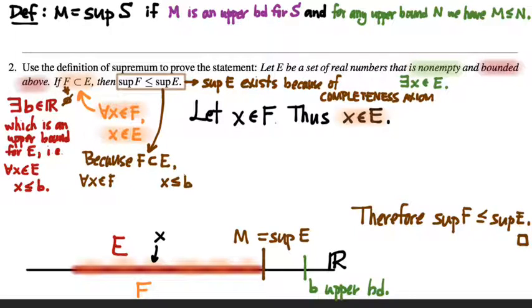And so, just to complete that thought, for all X in F, X is less than or equal to B because, for all X in F, X belongs to E. And because for every element in E, X is less than or equal to B, that means every element in F is less than or equal to B. And therefore, again by the completeness axiom, supremum of F exists. So whatever the supremum of F is, let's call it lowercase m. We know now that both E and F have supremums that are real numbers.